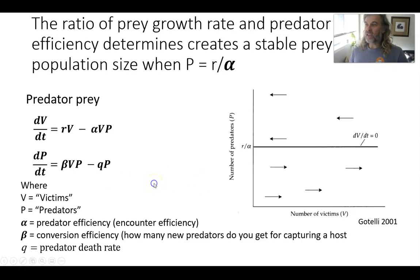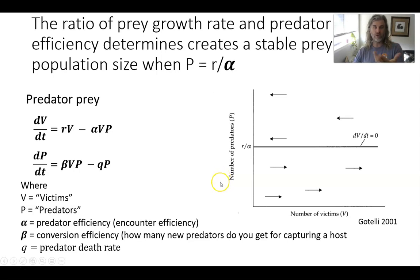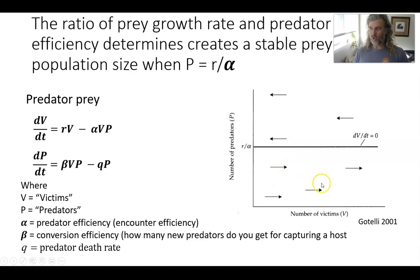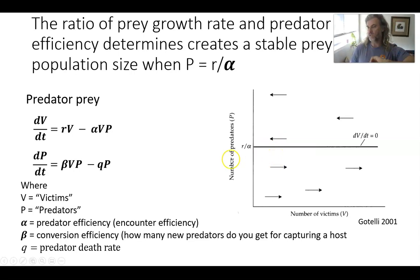Whenever you have two species, you have a threshold where populations are increasing or decreasing — these are called isoclines. For the prey, if there are too many predators, the prey population is going to decline. Likewise, if there are too few predators — below this threshold — the prey population will increase. That's the isocline: the point where the population growth rate switches between positive and negative.